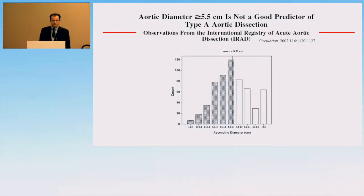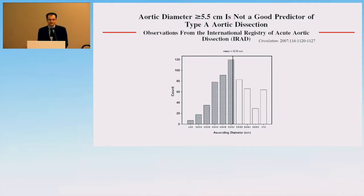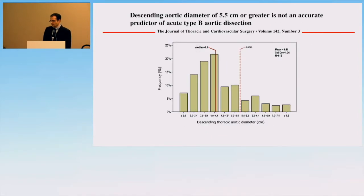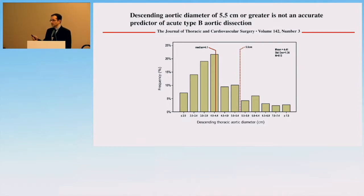Data from the IRAD registry tells us that our previous marker for aortic surgery at 5.5 centimeters is clearly not sufficient in identifying patients at risk. The median diameter at which aortic dissections tend to occur is in fact 5.3 centimeters. This is even more striking for descending thoracic aortic aneurysms and acute type B aortic dissection, where the median diameter is 4.1 centimeters, whereas our guidelines tend to be 5.5 or higher for surgical intervention.